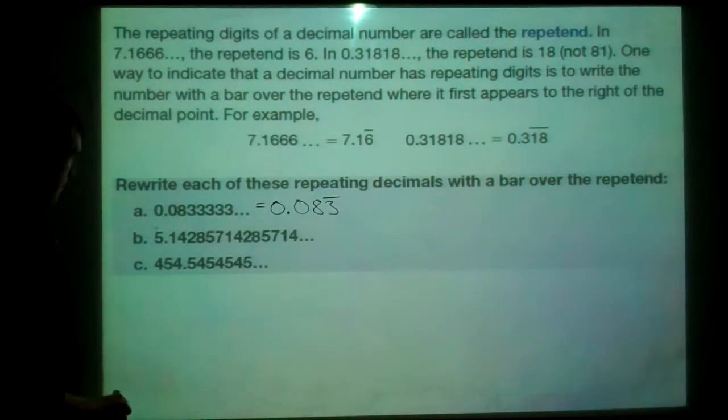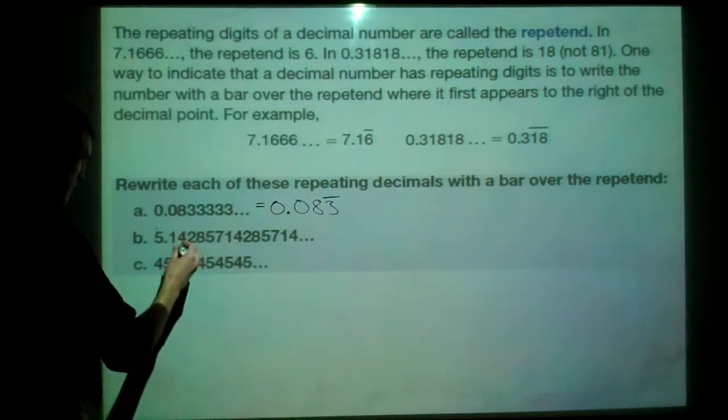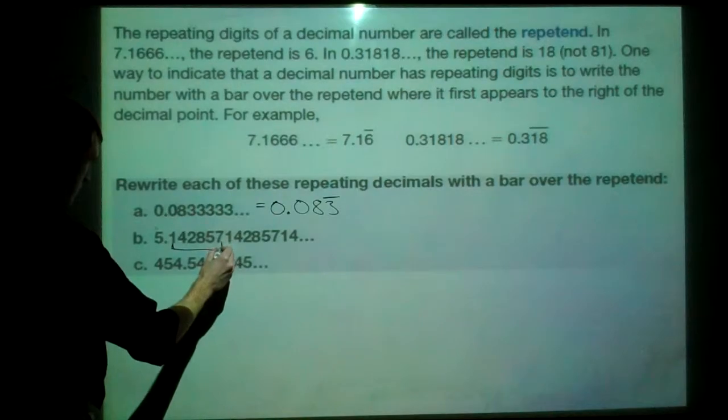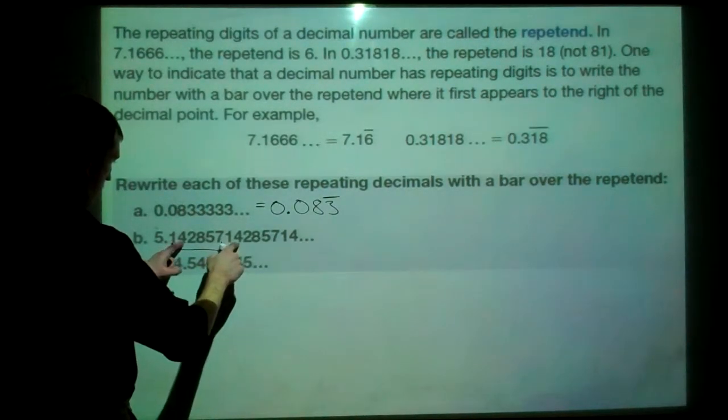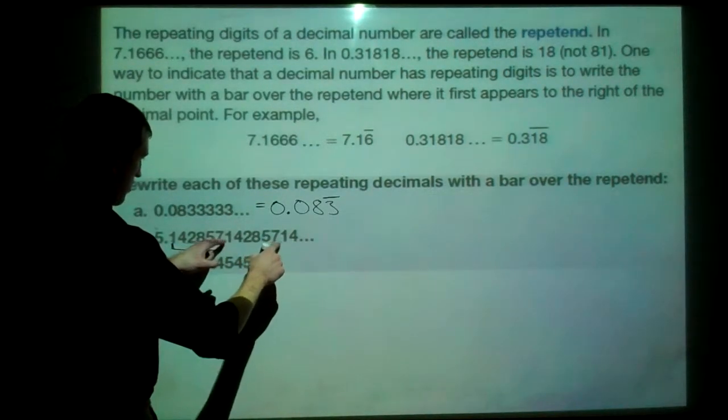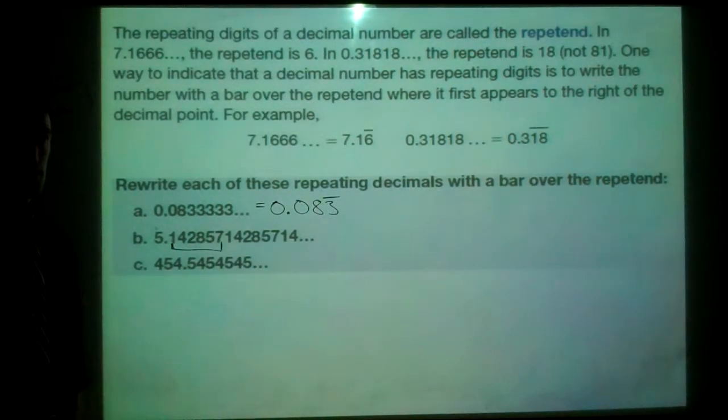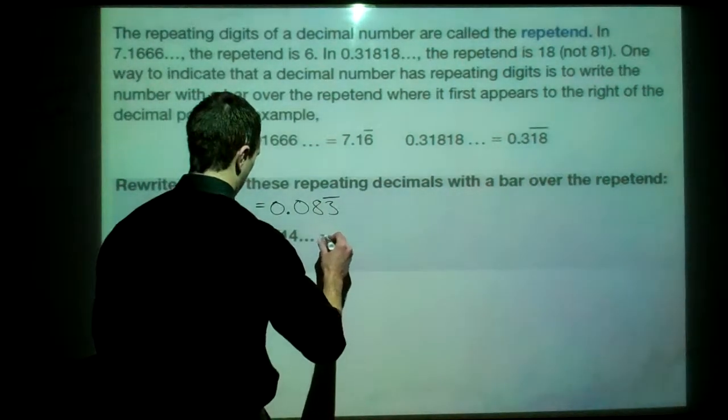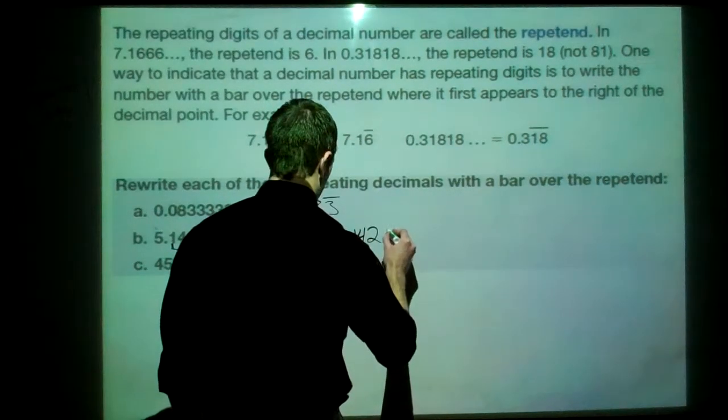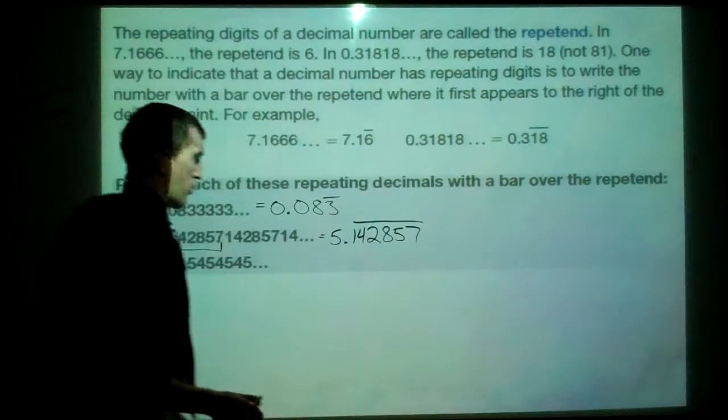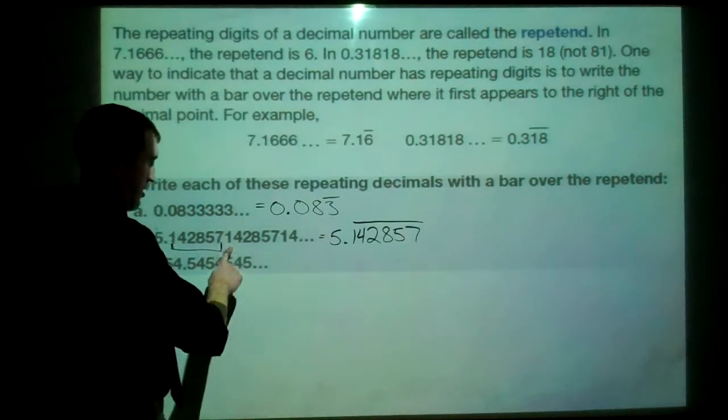This one looks a little funky, but let's see if we get the repetition here. 1, 4, 2, 8, 5, 7. Nothing yet. But if we look here, from here to here, I think we get that again. 1, 4, 2, 8, 5, 7. 1, 4, 2, 8, 5, 7. So, this one will keep going on. It doesn't look like it has repetition at first, but we have to be careful because it actually does. So, this equals 5.142857 and those are all the things that would repeat. So, then, once we got past the 7 again, we'd start over with a 1.